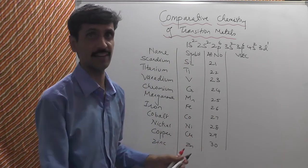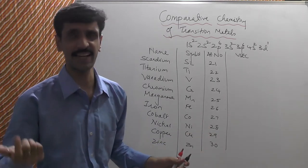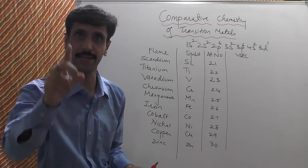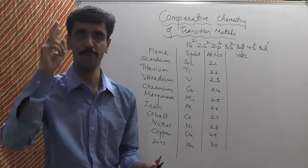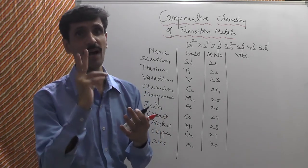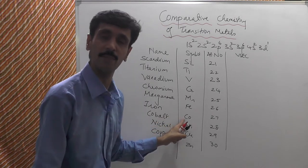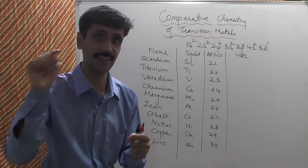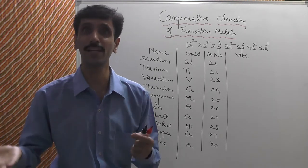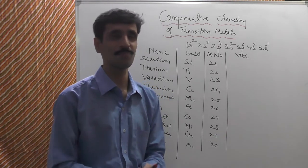Then Copper (Cu), atomic number 29, and finally Zinc (Zn), atomic number 30. These are the 10 elements because the capacity of the d orbital is 10. One basic note: whenever an element's symbol has two alphabets, the first is capital and the second is small. Be careful with Cobalt (Co) — the second letter 'o' must be lowercase; capital 'CO' is carbon monoxide, a molecule.